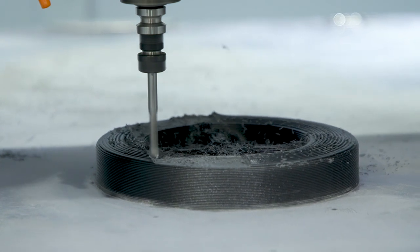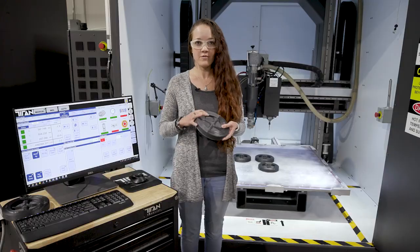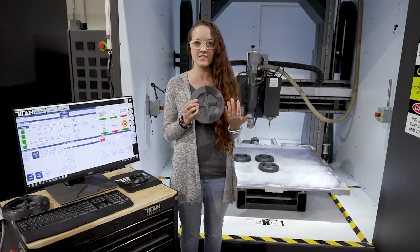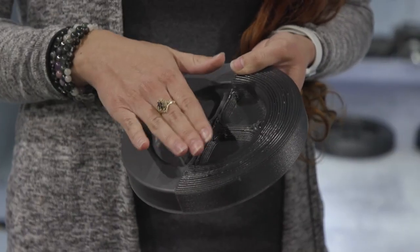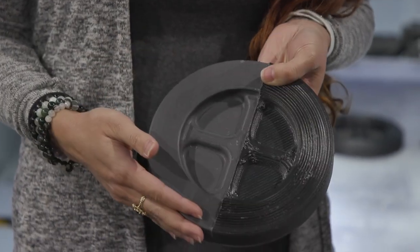Our answer to that was the hybrid system, which uses subtractive and additive manufacturing. What we did here is over-extrude so that we have extra stock to cut down. We cut that with the spindle to get an extremely smooth surface finish and very high dimensional accuracy.